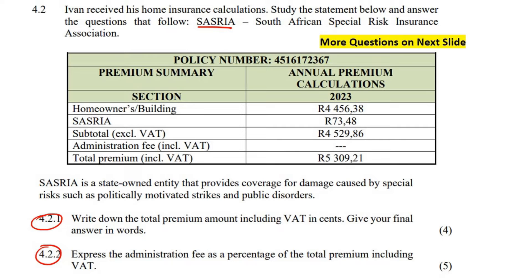SASRIA stands for South African Special Risk Insurance Association. Ivan received his home insurance calculations. Sometimes you have to have your house insured — for example, in places like California in America where they often have fires. They're going to ask you to have your house insured because if a fire breaks out, you need to get paid out. SASRIA is a state-owned entity that provides coverage for damage caused by special risks such as politically motivated strikes and public disorders.